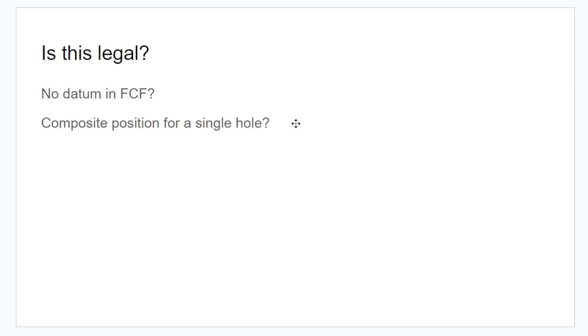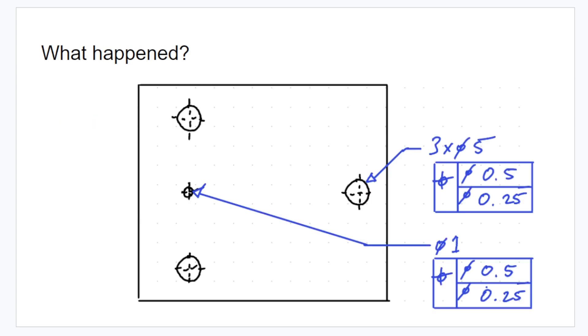The first one is that there's no datum in the feature control frame. But there's actually no problem with that. There's nothing in the standard that says that you need to have a datum in a feature control frame to control a pattern of holes. This could be the primary establishing feature that everything else relates to. There's no problem with that. It's an incomplete drawing. So, at the moment, everything else is just floating in space. But I'll show an example of where something like this might make sense later in the video.